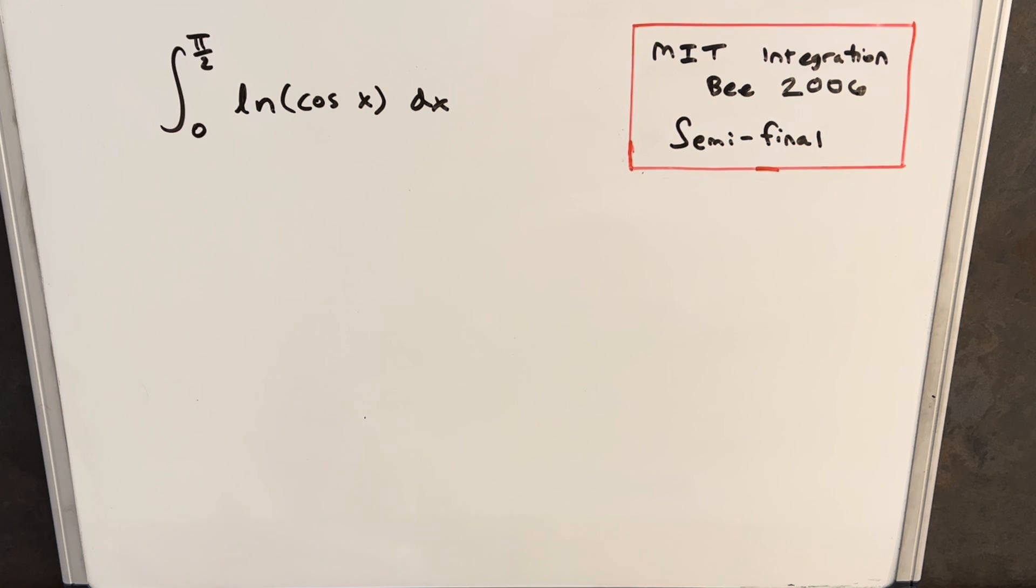Hey, continuing with another integral from MIT Integration Bee. This one's from 2006, from the semifinal. We have the integral from pi over 2 to 0 of ln cosine of x dx.